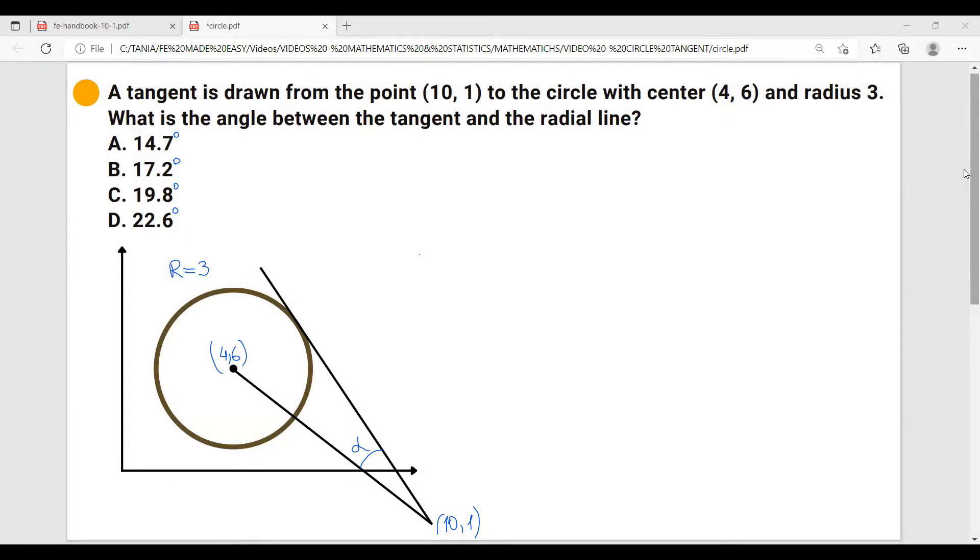Now let's move on with our example. A tangent is drawn from the point (10, 1) to the circle with center (4, 6) and radius 3. What is the angle between the tangent and the radial line?